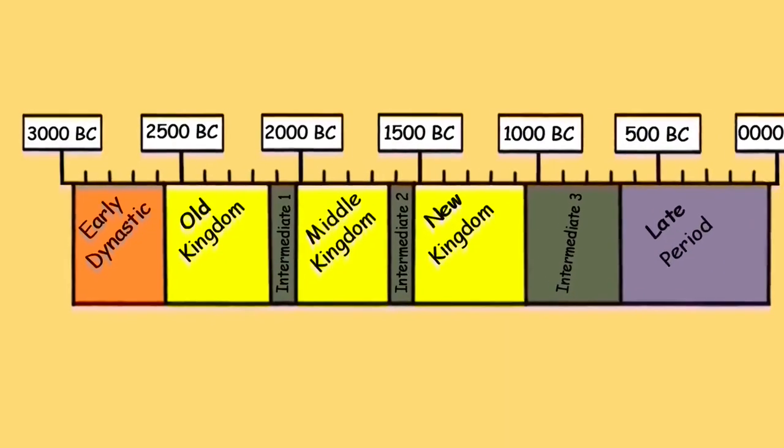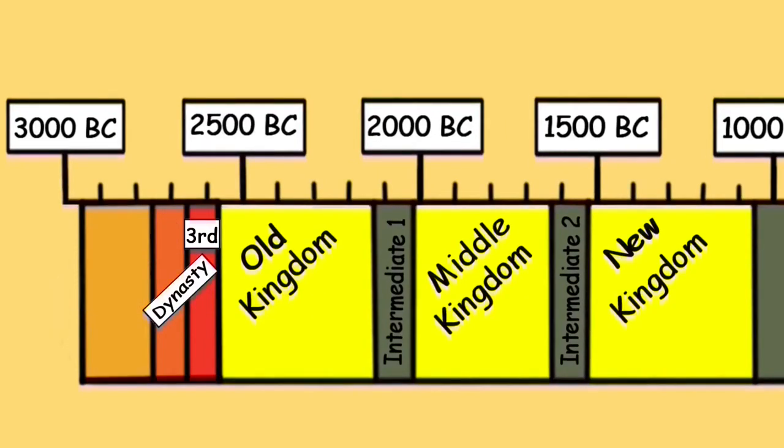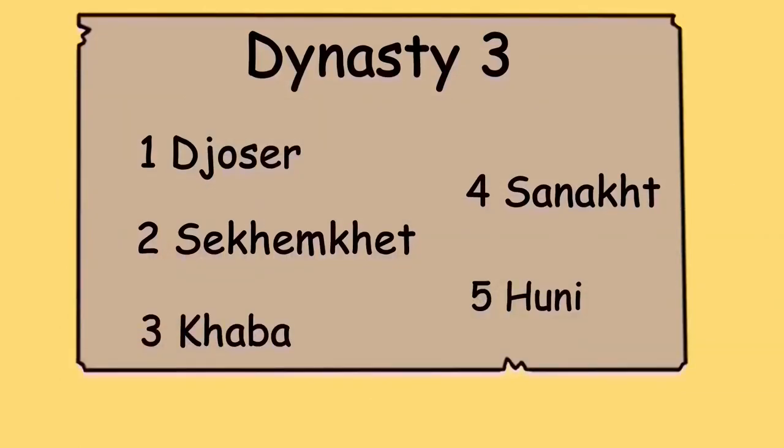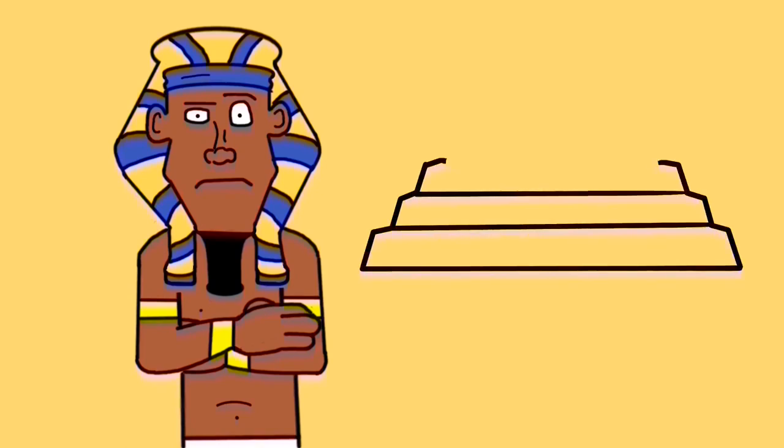To explore the first pyramid, we need to go all the way back to the third dynasty, which lasts from 2650 to 2575 BC. The pharaoh credited for commissioning the first pyramid is Djoser. He reigned at the beginning of this dynasty. There is some debate as to whether he was the first or second pharaoh, depending on which kings list you go by. Either way, Djoser is responsible for what is known to us today as the Step Pyramid, named because of its step-like structure.